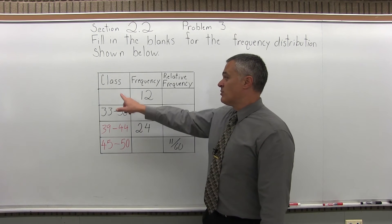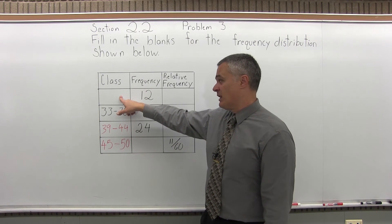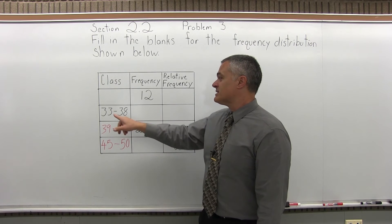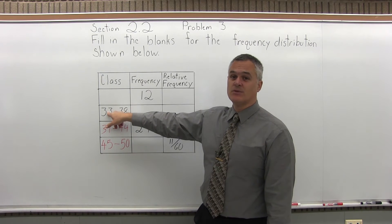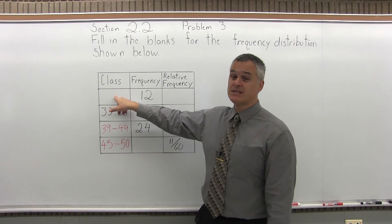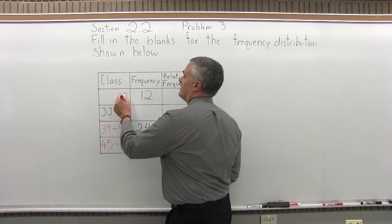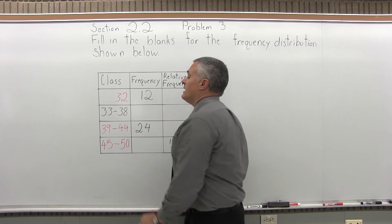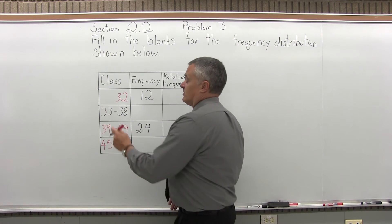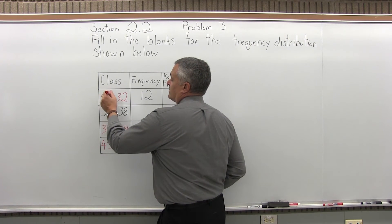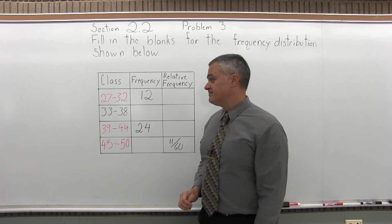There's one more class before the given one that's also blank. Same type of process: if the given class begins at 33, the one before it must end at 32 if there's no gap and no overlap. Something plus 5 adds up to 32 — well, 27 plus 5 is 32. So I've now filled in the left column.